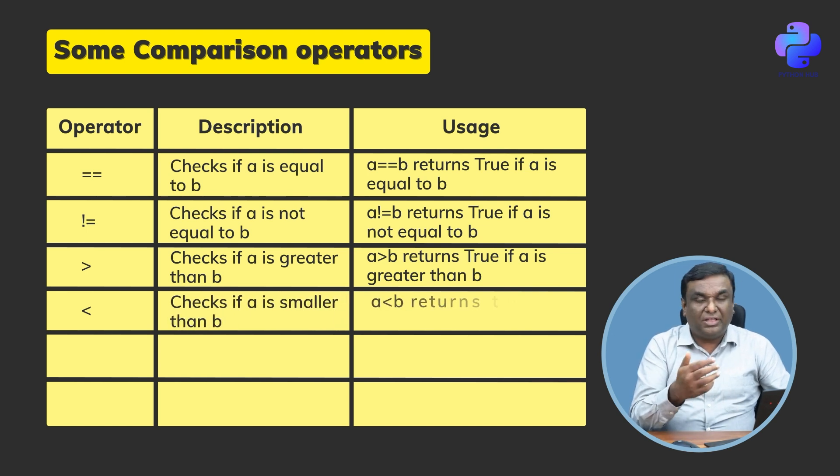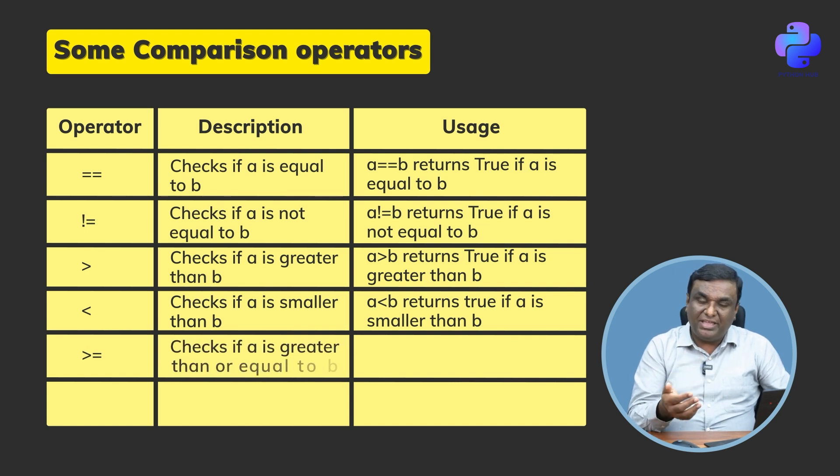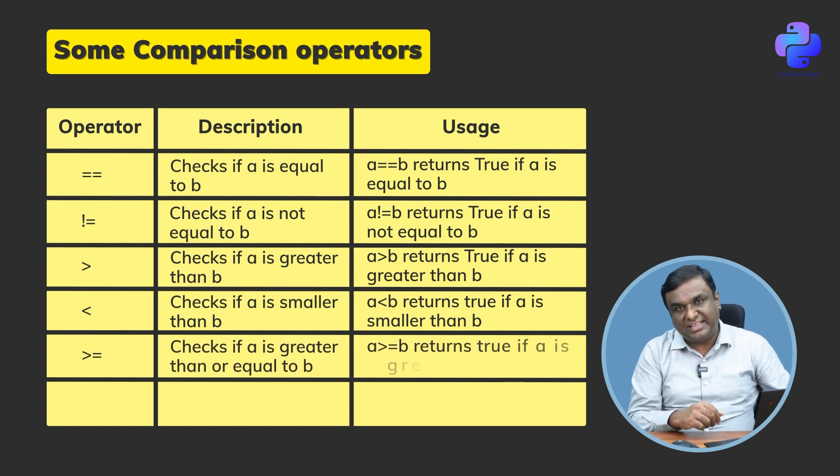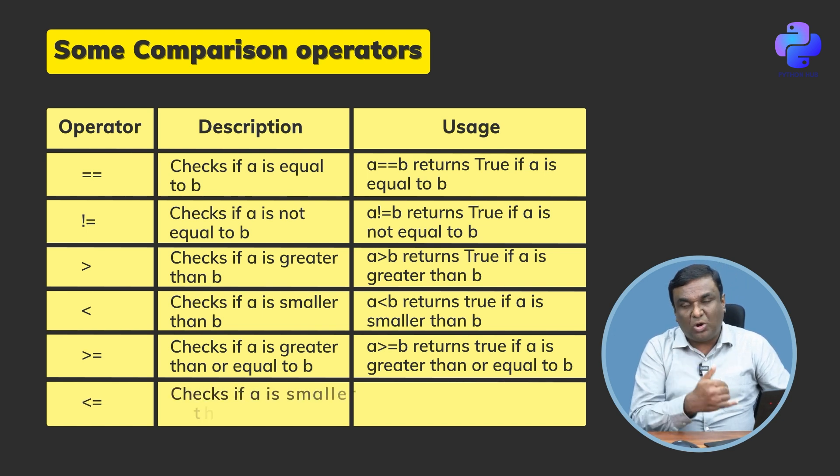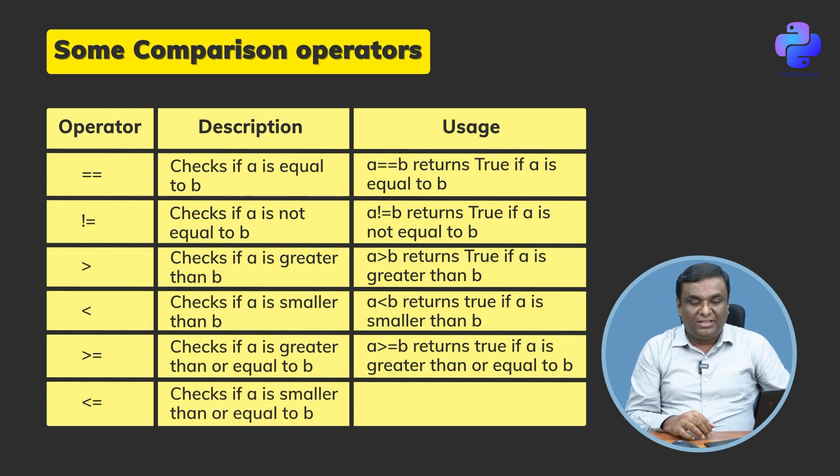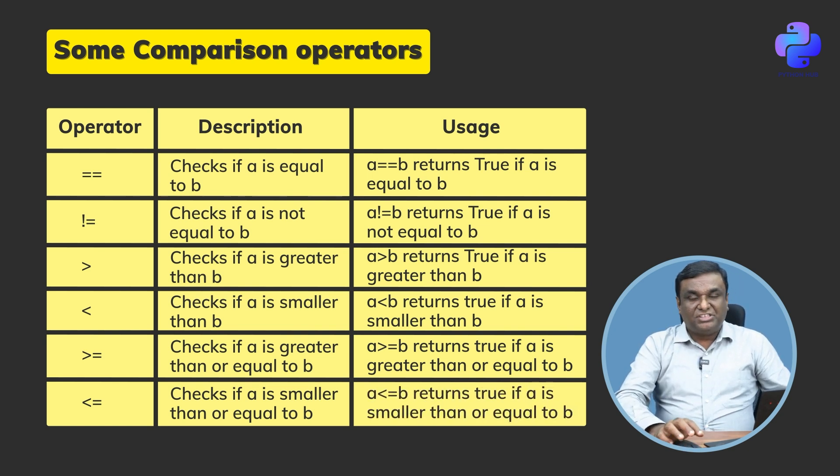A less than b checks if a is lesser than b and returns true if that is the case, and returns false if that is not the case. Similarly, a less than or equal to b checks if a is smaller than or equal to b and returns true if a is smaller than or equal to b. I hope you have understood what comparison operators can do for you.